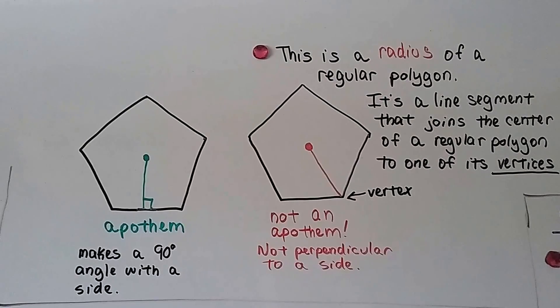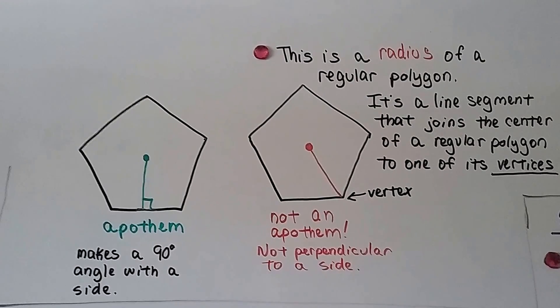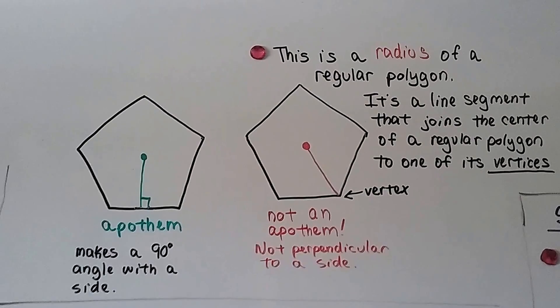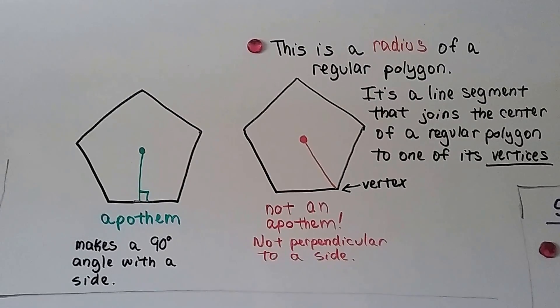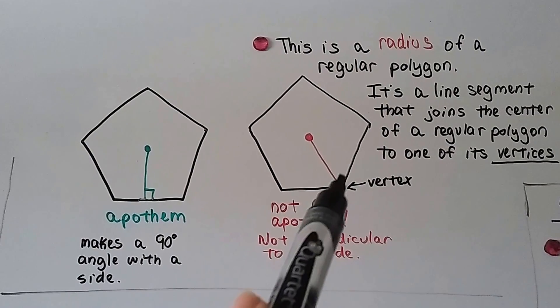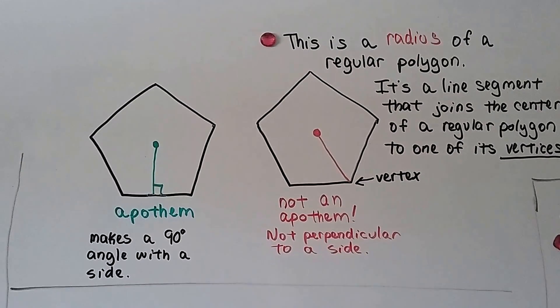That is the radius of a regular polygon, it's not an apothem, it's a line segment that joins the center of a regular polygon to one of its vertices. That's not perpendicular to a side, that would be like 45 degrees or something, wouldn't it?